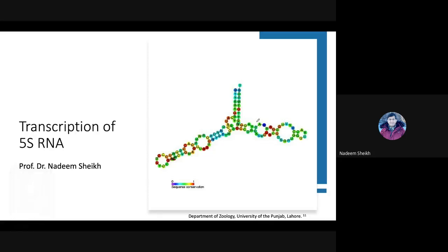In the color coding shown, this is basically the secondary structure of 5S RNA. The different color codes tell us how conserved the sequence is among different species. The red background indicates highly conserved regions, while blue or green represent a scale from 0 to 1, varying in conservation.